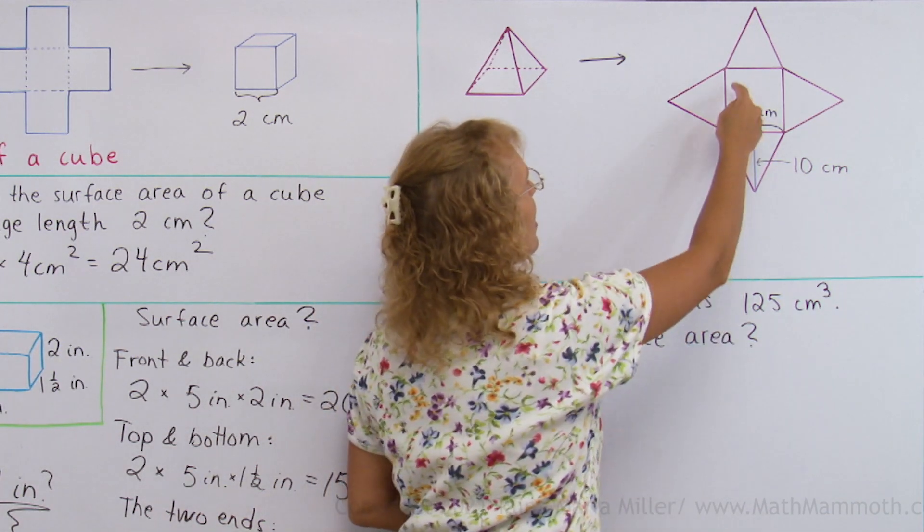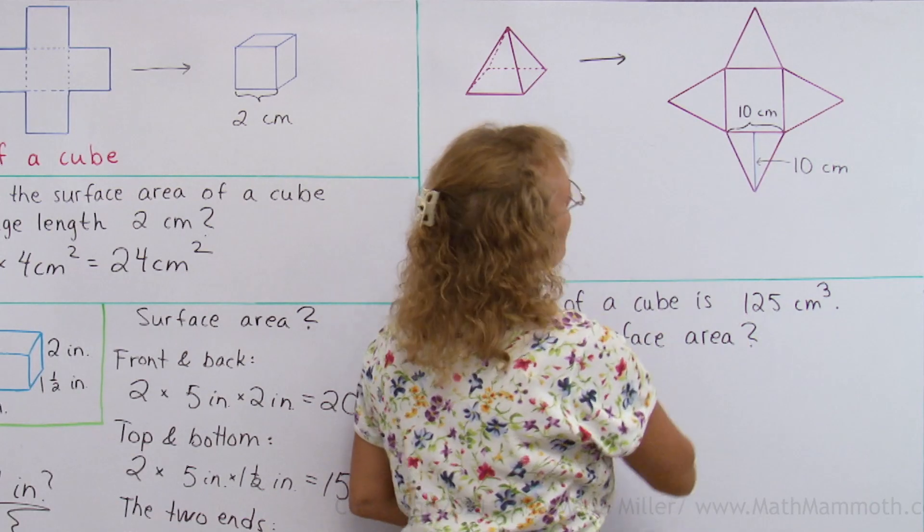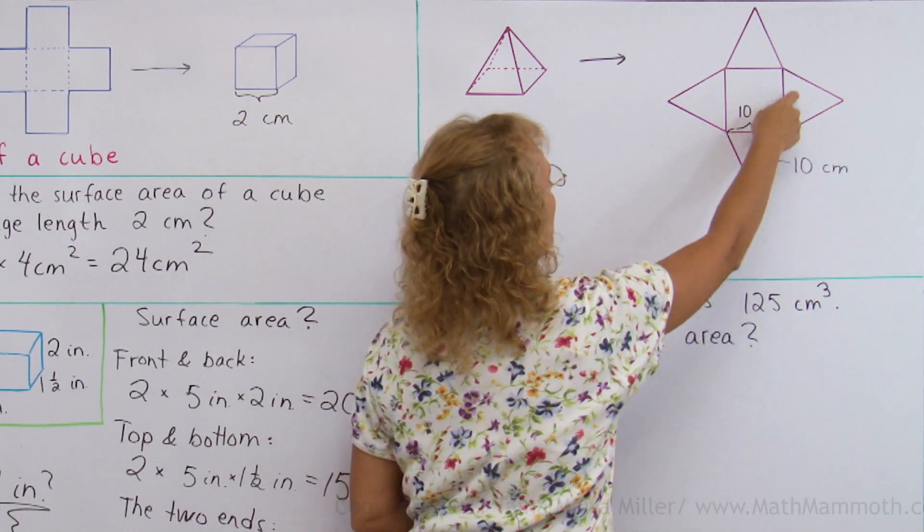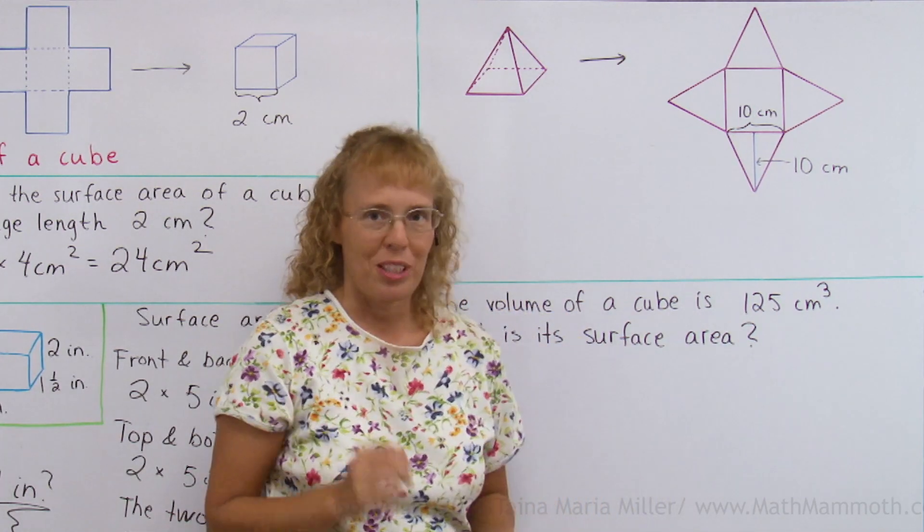And to calculate the surface area, I'll first calculate the area of this square, then the area of one of these triangles, and take that times 4, and then add all of those together.